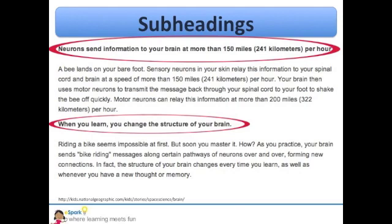Subheadings within a text can help you find key information quickly. The subheadings from the article I read tell me that neurons send information to your brain at more than 150 miles per hour. Whoa, that's fast! The next one teaches me that when you learn, you change the structure of your brain. The subheadings are also in bold text, which lets me know that they are important.